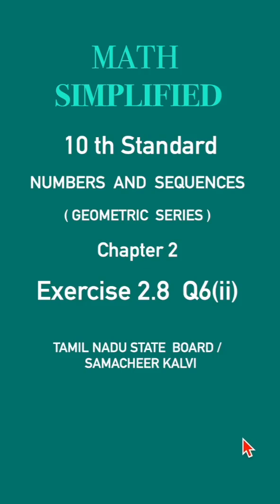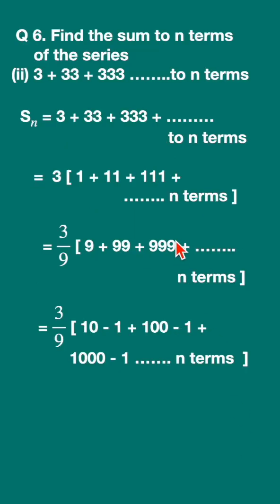Question 6: Find the sum to n terms of the series 3 plus 33 plus 333 to n terms. Write down the sum here, take out 3 common, so you are left with 1 plus 11 plus 111 plus up to n terms.